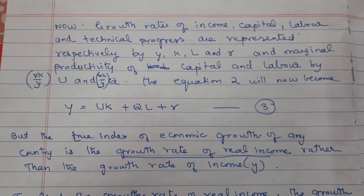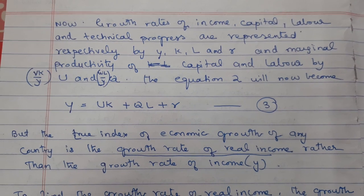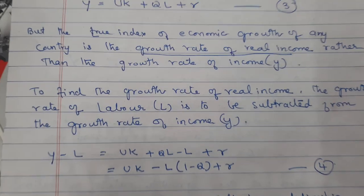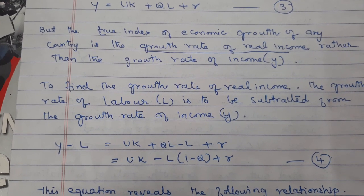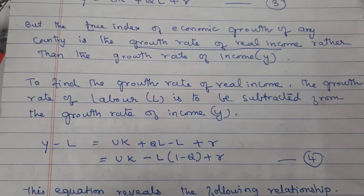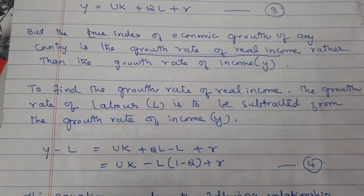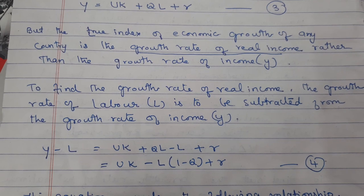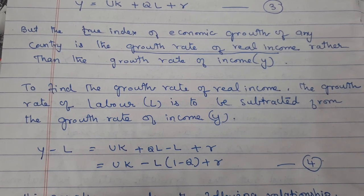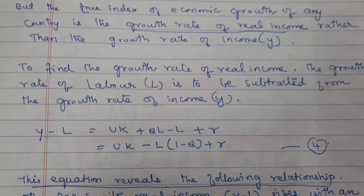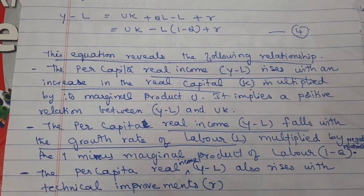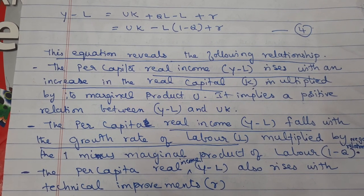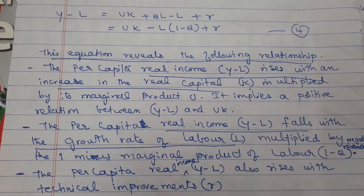Equation 2 is now substituted as: Y = UK + QL + R (Equation 3). However, the true index of economic growth is the growth rate of real income rather than the growth rate of income. To find the rate of real income, the growth rate of labour L is subtracted from the growth rate of income Y: Y − L = UK + (Q − 1)L + R, rewritten as UK − L(1 − Q) + R (Equation 4).